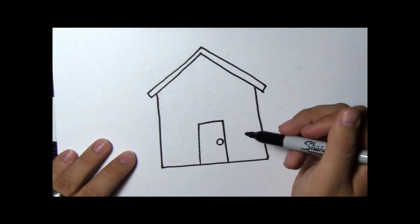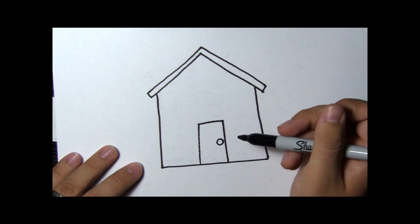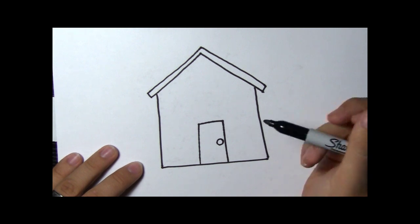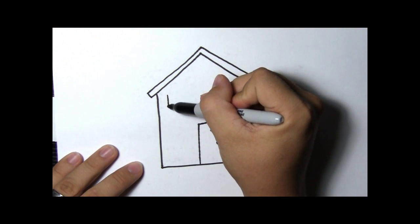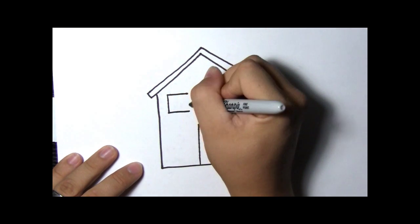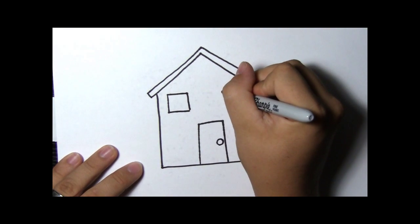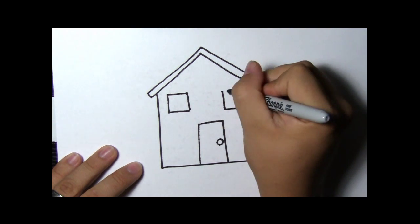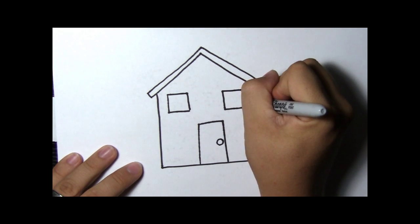Now that we're inside our house, how are we going to see out? How about we put on some windows? Those are squares. Let's put two on our house. How many are you going to put on yours?